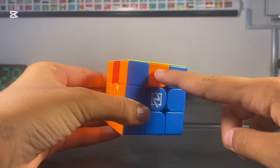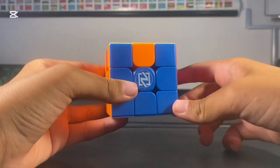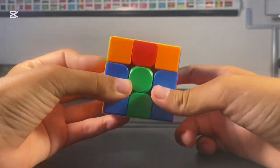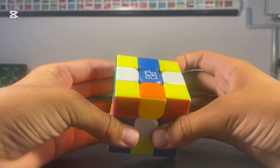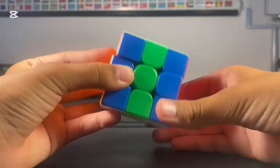Number two, counterclockwise turn. You have to turn all the edges counterclockwise once. The algorithm is M-2-U-M-2-U-2-M-2-U-M-2.